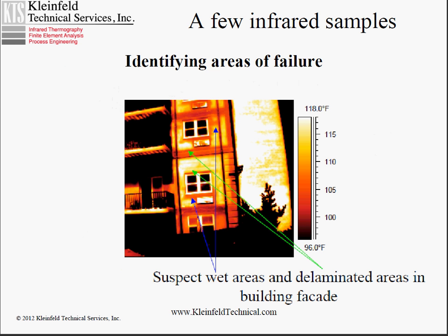Infrared can be used to identify areas of failure. This instance is an example of a building, but it can be used for a broad range of non-destructive testing. The wet areas marked with the blue arrows are cooler than the rest of the building, and they therefore are indicative of having moisture. The bright areas marked with the green arrows are delaminated, and that means that part of the building facade is actually falling apart.